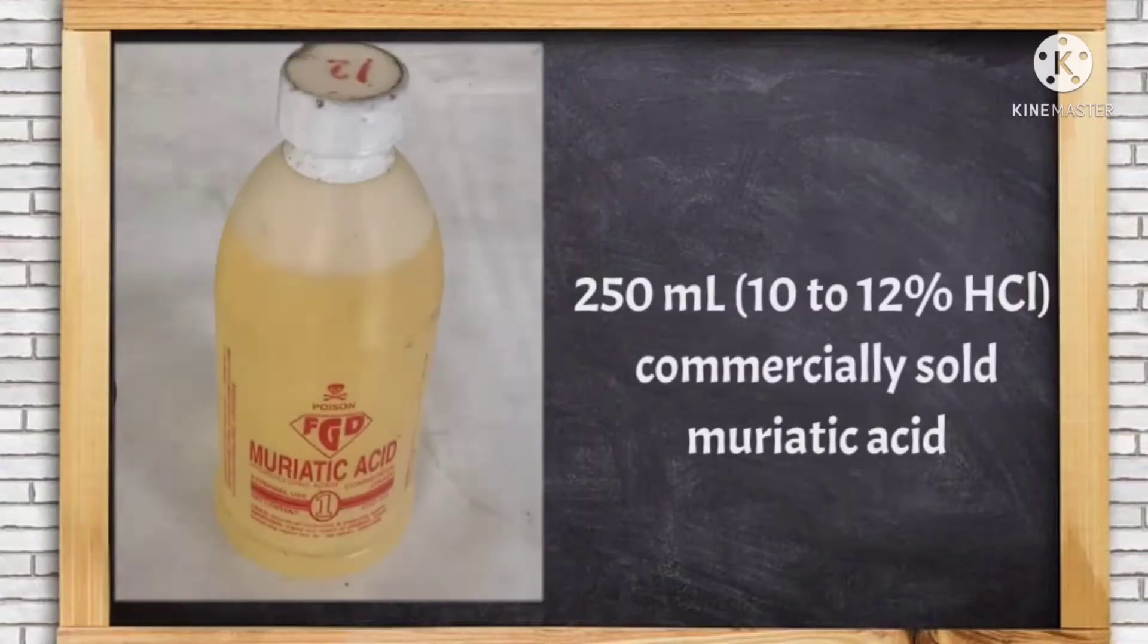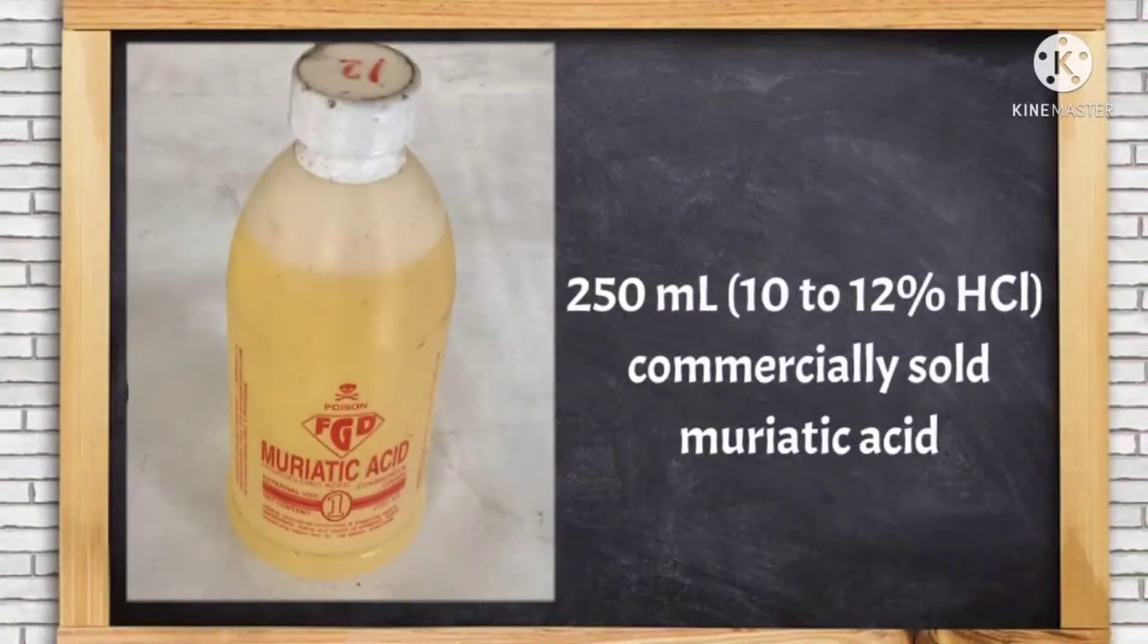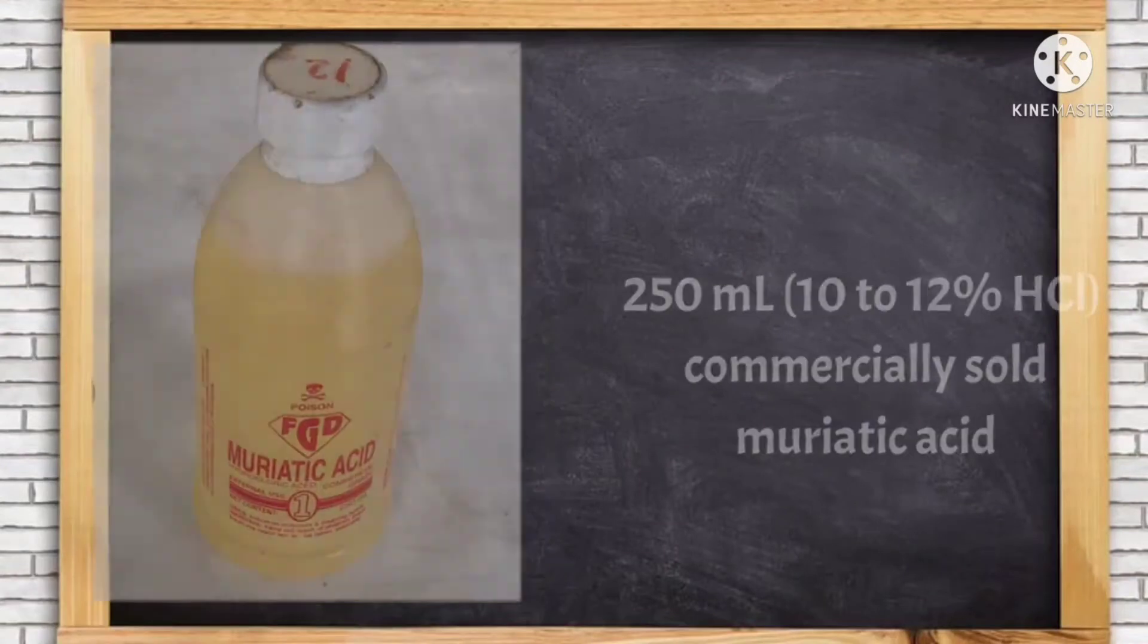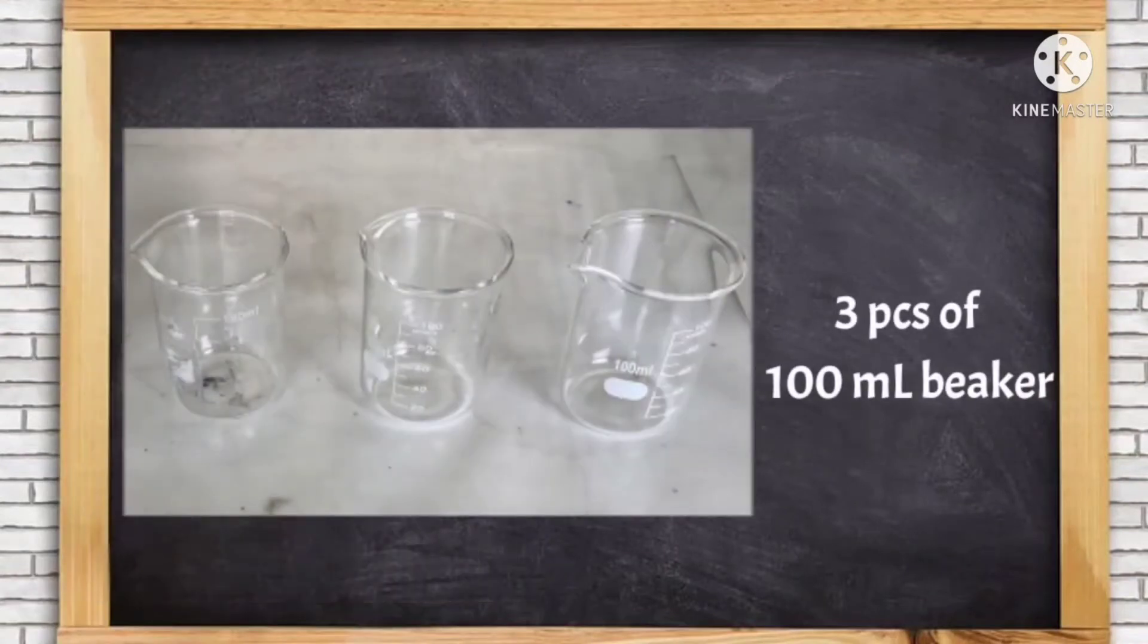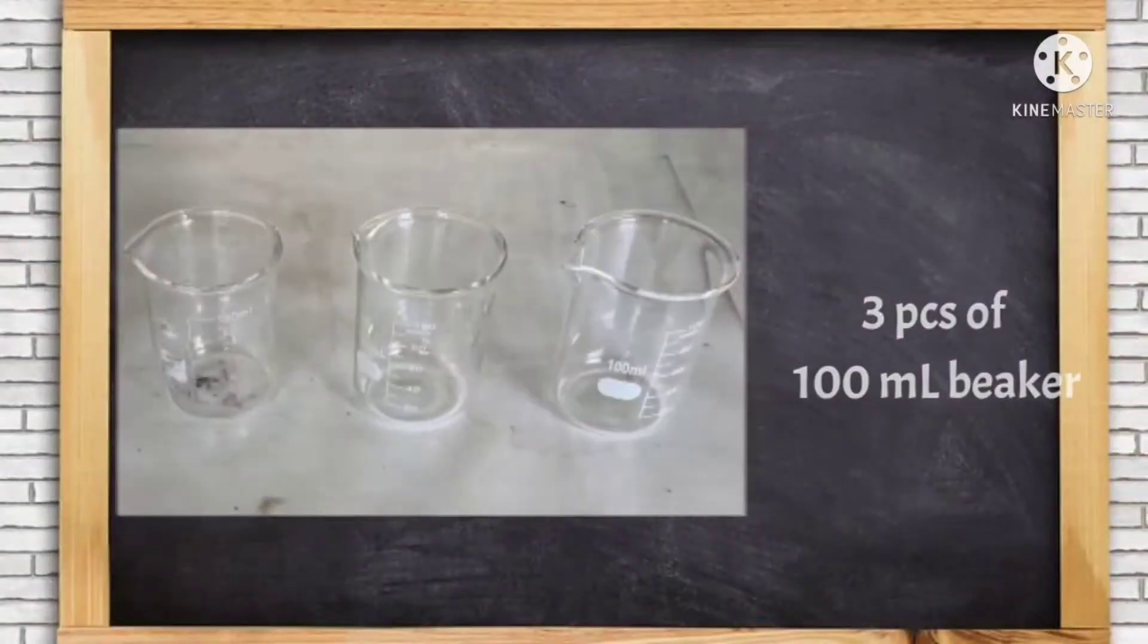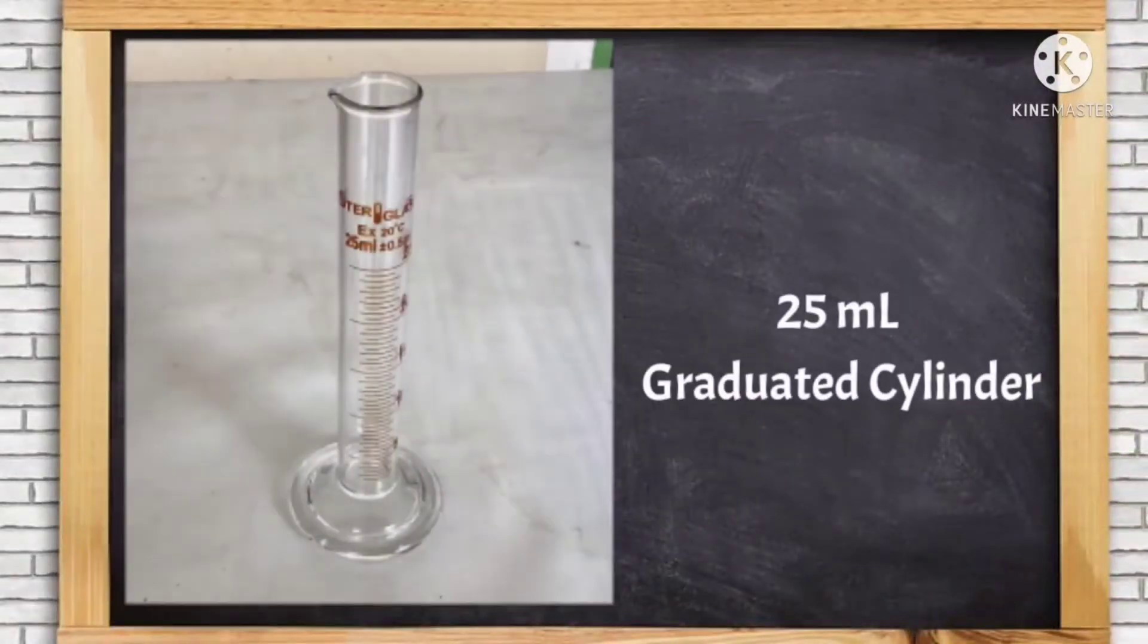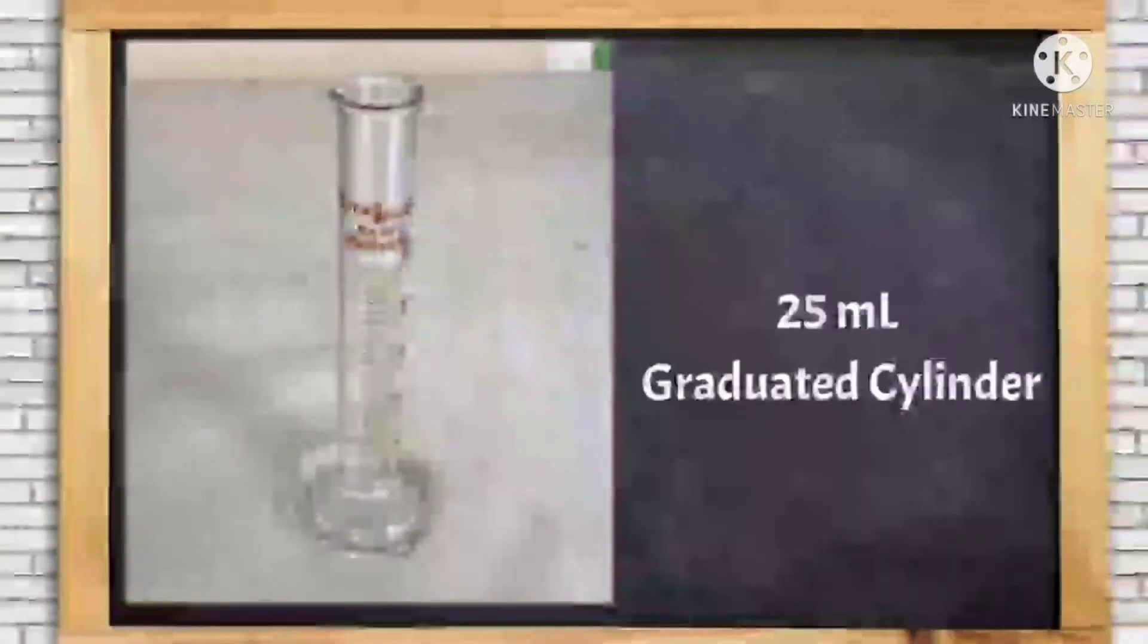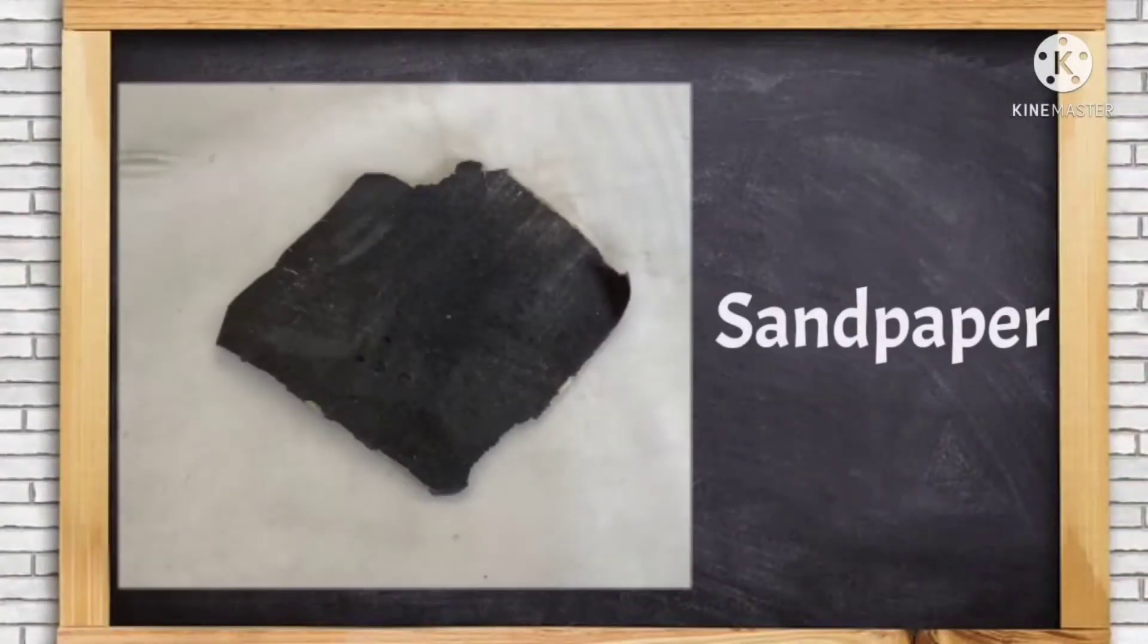250 ml, 10 to 12% hydrochloric acid, commercially sold muriatic acid. 3 pieces of 100 ml beaker, 25 ml graduated cylinder, a sandpaper.